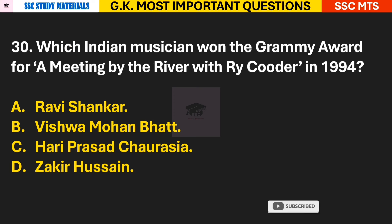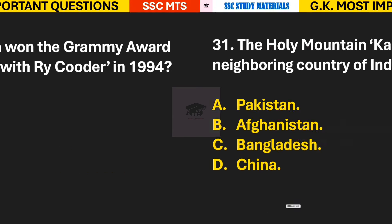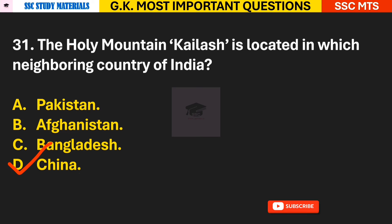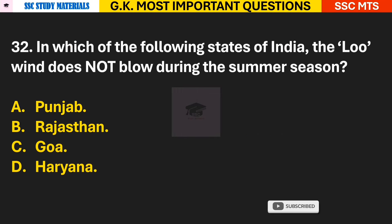Question 30: Which Indian musician won the Grammy Award for 'A Meeting by the River' with Ry Cooder in 1994? Answer B — Vishwa Mohan Bhatt. Question 31: The holy mountain Kailash is located in which neighboring country of India? Answer D — China.